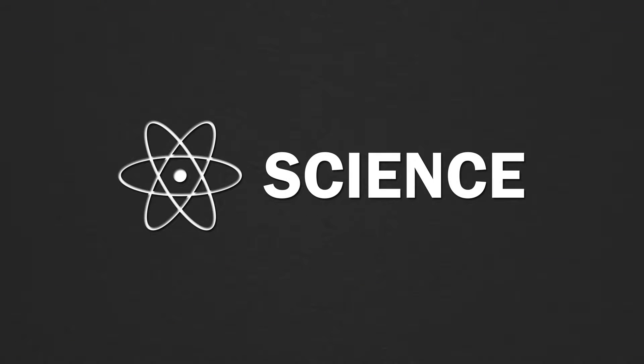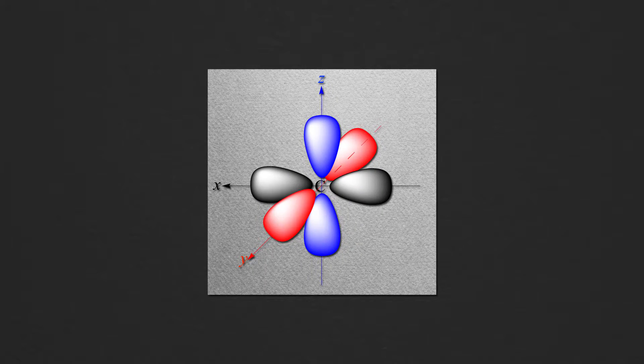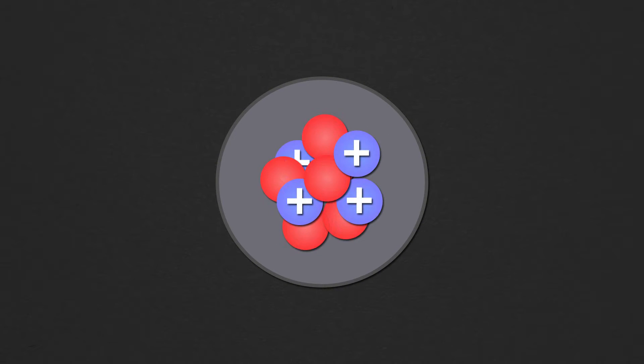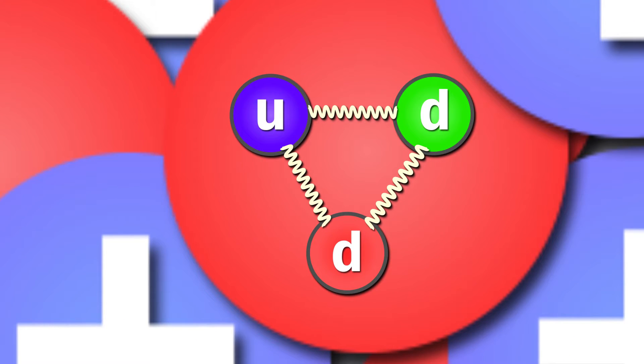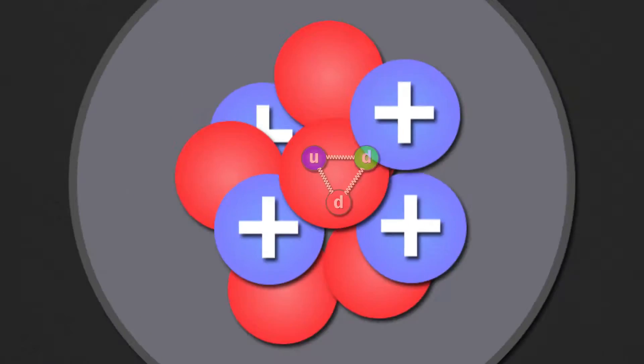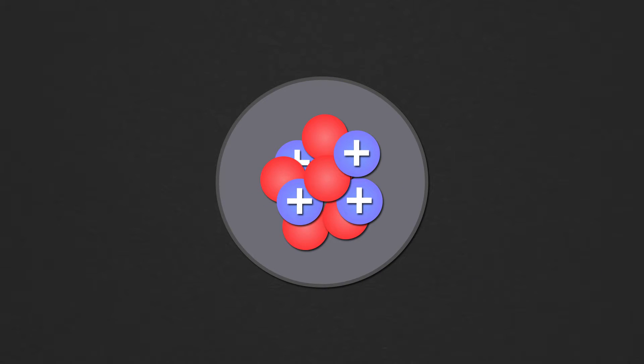In terms of where atomic science stands today, the Heisenberg model is still given credence for its accuracy. However, we have also discovered what lies within the subatomic particles — those being gluons and quarks. But that's for another day.